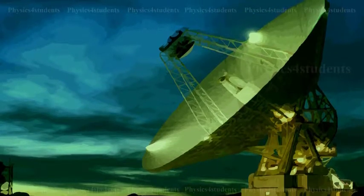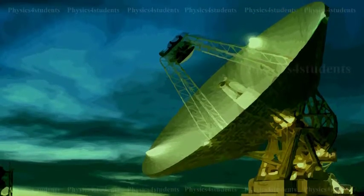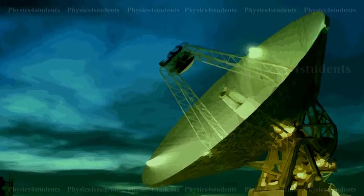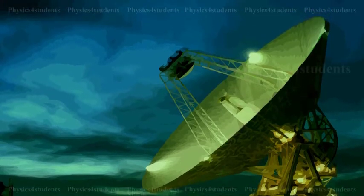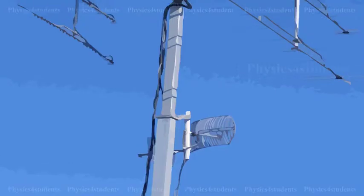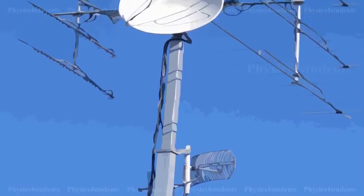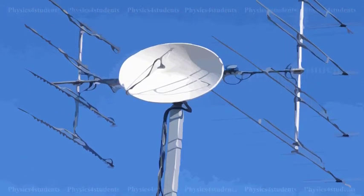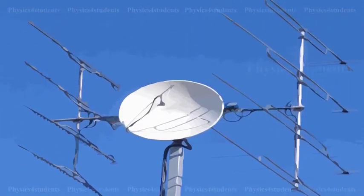An antenna is characterized by an important parameter, directivity. Directivity is the ability of the antenna to concentrate the electromagnetic waves in the most desired directions during transmission or to have maximum reception from most preferred directions during reception.